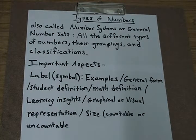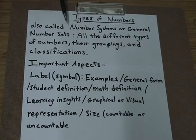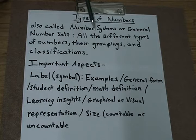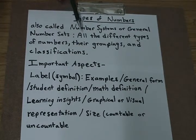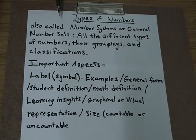In math, it's very important to understand the different types of numbers. The different types of numbers are also called number systems or general number sets. What these are is generally all the different types of numbers, their groupings and classifications, which is very important to know for word problems and directions.